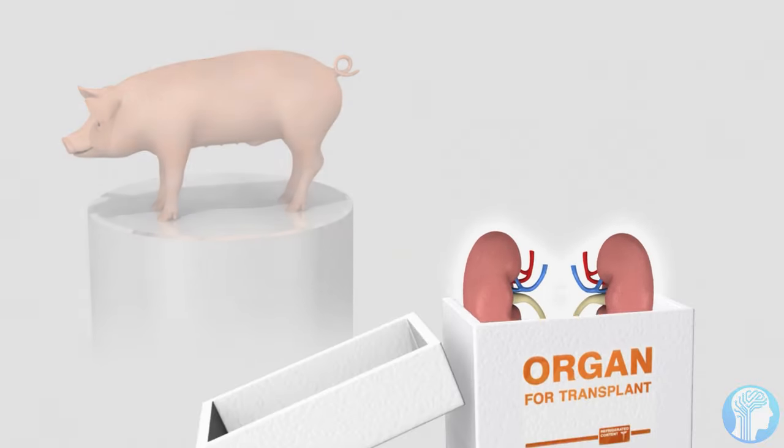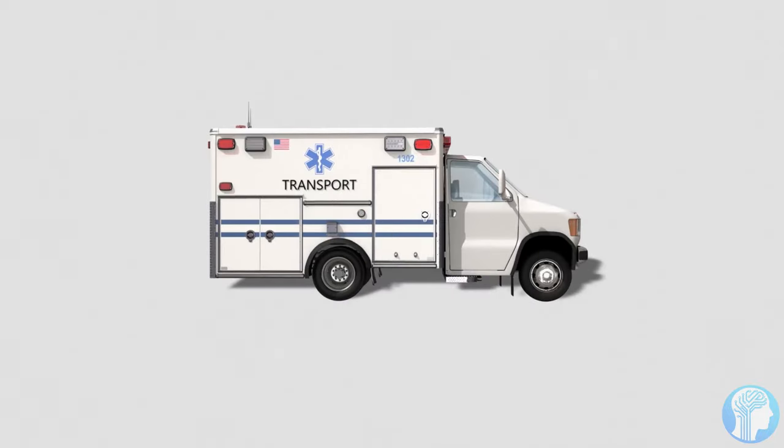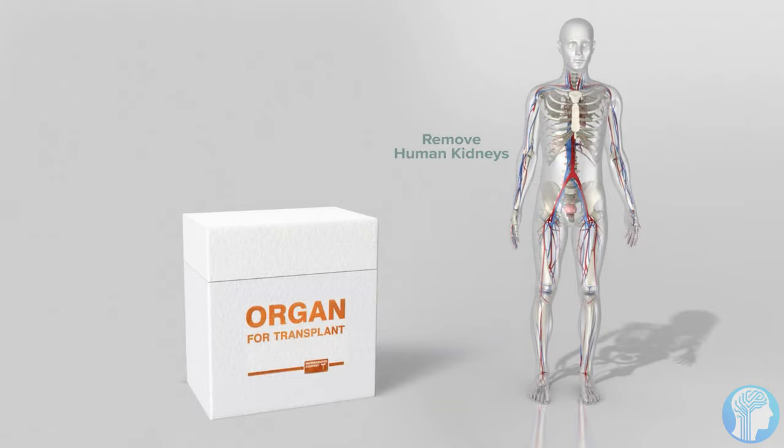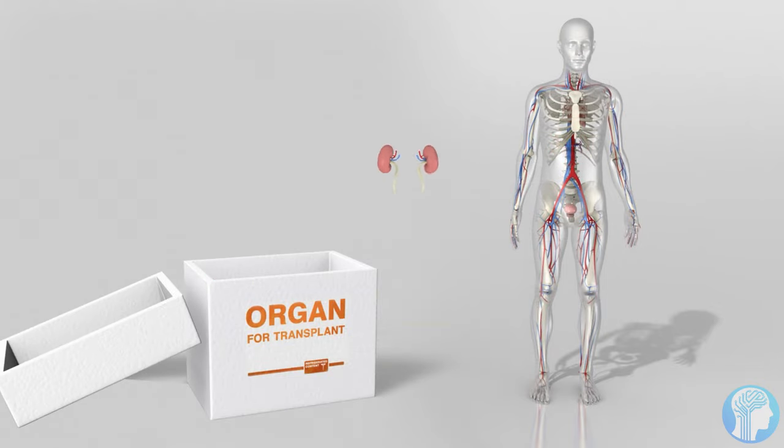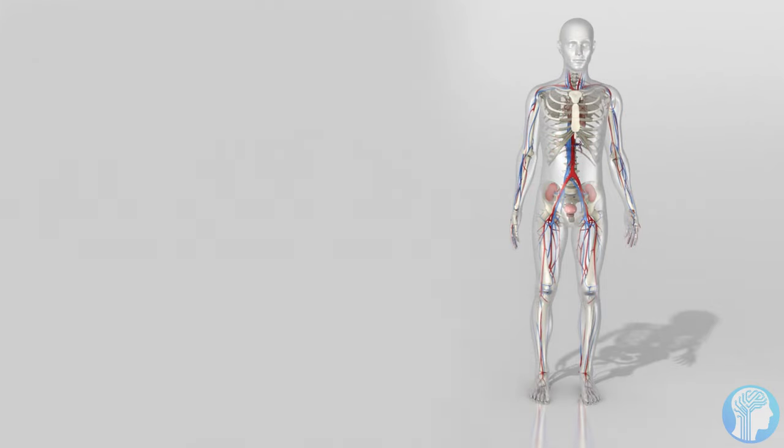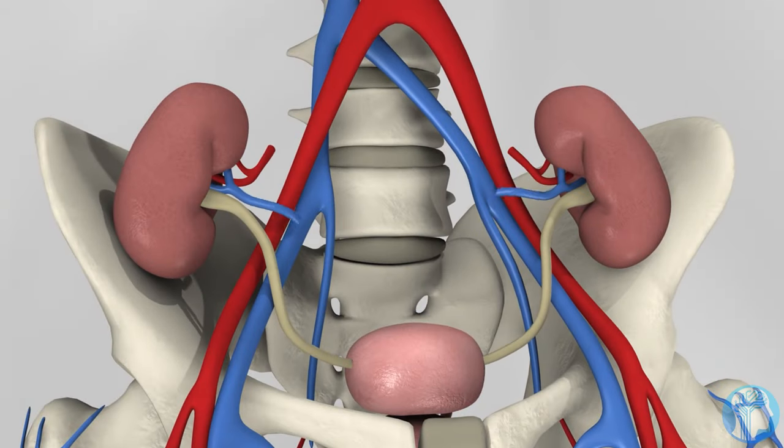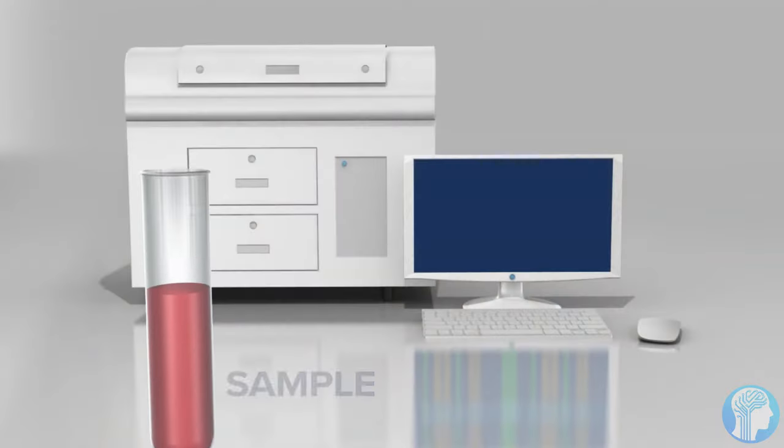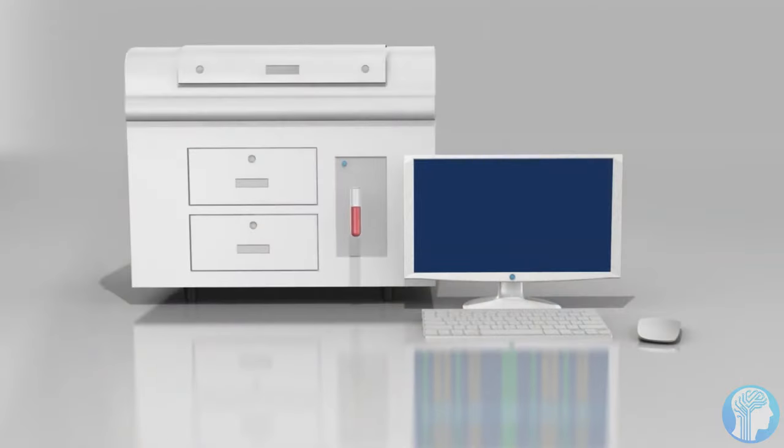Take, for example, PERVs, porcine endogenous retroviruses, which are buried in pig DNA and must be precisely plucked out by gene editing. For years, scientists experimented with genetic alterations to make a pig heart more compatible with a human chest. CRISPR, or CRISPR-Cas9, is a gene editor whose accuracy gives xenotransplant enthusiasts a tool to test out their theories. The field had taken off.